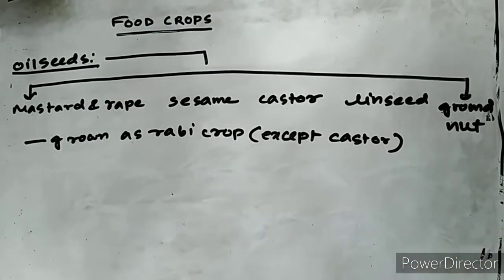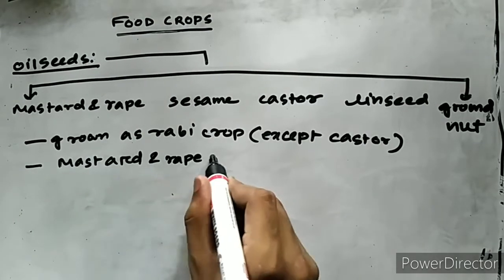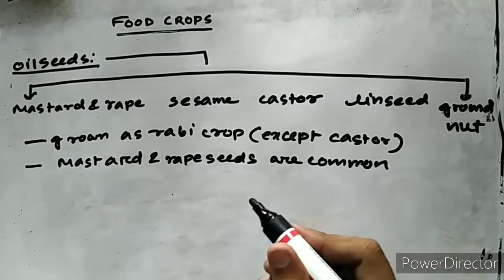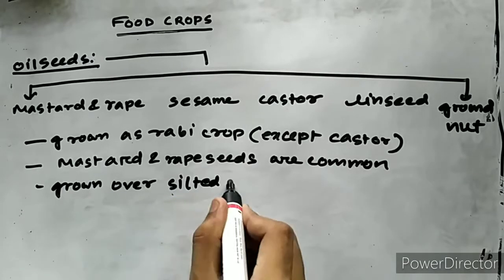Almost all the oilseeds except castor are grown as rabi crops. In Assam, the oilseeds, especially the mustard and sesame, are grown over silted floodplains during dry season.